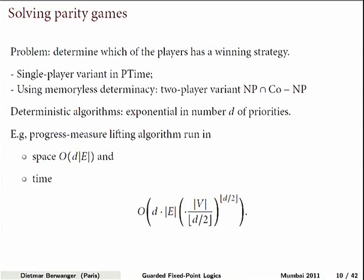The algorithms for parity games are easy to understand, up to the point to which we know them. If you have only one player, it is not very difficult to see that it is in P-time to tell whether the player wins. If you go to the two-player version, it's about guessing: if you guess the strategy, you can tell whether it's a winning one — this gives you an NP algorithm. And for the other player it's co-NP, so we have NP ∩ co-NP.